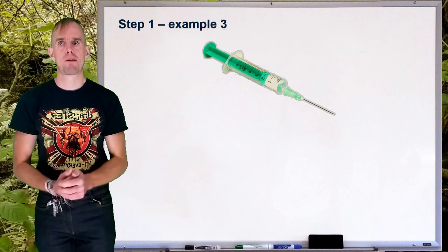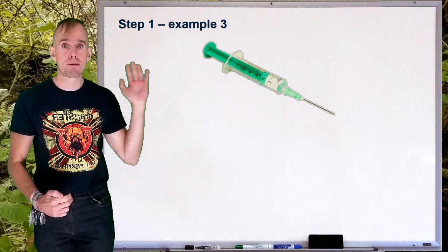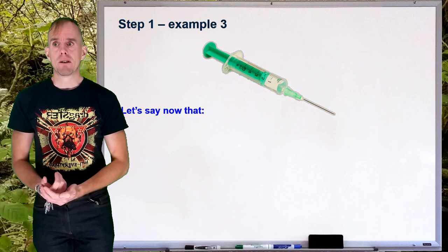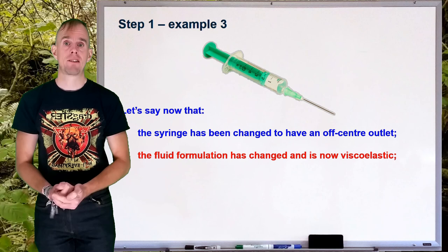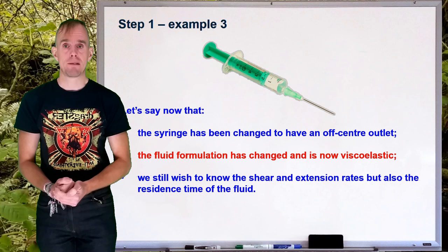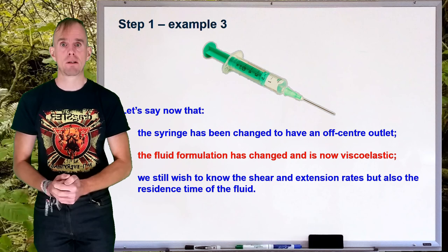OK, let's go on to example 3. So here on my whiteboard, again, I've put a syringe. But if you look carefully, you'll note that the outlet of the syringe is now off-centre, breaking axisymmetry. So this is now a fully three-dimensional flow problem. So, if we examine this, let's have a look and say that we recognise that we have an off-centre outlet to our syringe. We also recognise that micelles, in this case, do add viscoelasticity to our solution. So, we have increasing complexity. Let's say we still want to know the fluid shear and extension rates and also the residence time of the fluid because we have a deformation-sensitive material and we don't want to exceed these critical shear or extension rates.